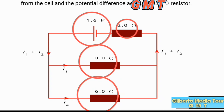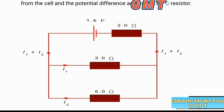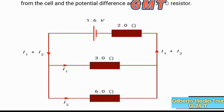We are asked to find the total current from the circuit. The total current is I1 plus I2 — that is, the summation of all currents from each resistor: the current through the 3-ohm resistor and the current through the 6-ohm resistor. We are also asked to find the potential difference across the 3-ohm resistor, which we can get after finding the current through it.